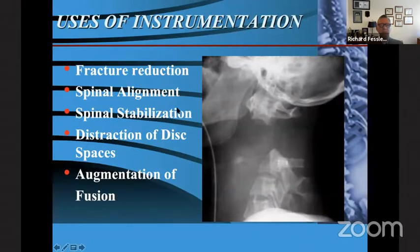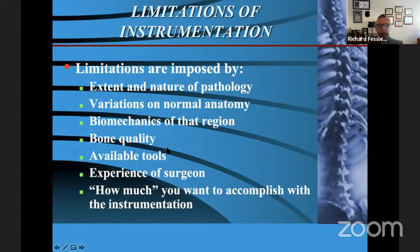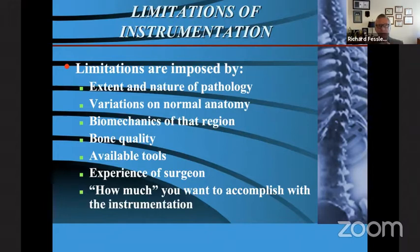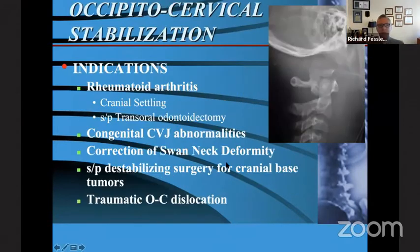The uses of instrumentation: we reduce the fracture, align the spine, stabilize it, distract the disc spaces, and augment fusion. The limitations on instrumentation are imposed by several things: the extent and nature of the pathology, variations in normal anatomy, the specific biomechanics of that region, the quality of the bone, the instrumentation available, and the experience of the surgeon. Again, the question becomes how much you want to accomplish with the instrumentation and not asking too much of it. Let's start at the occipital-cervical junction.